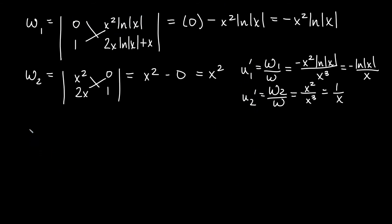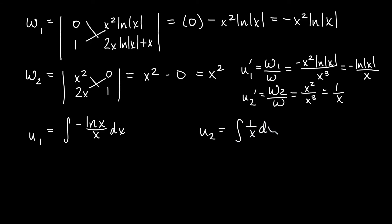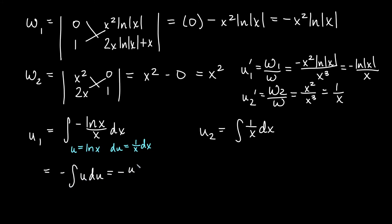We integrate to find u1 and u2. u1 is the antiderivative of negative ln x over x dx. Using u-substitution with u equals ln x, du equals 1 over x dx, this becomes the negative integral of u du, giving negative u squared over 2, or negative ln squared x over 2. For u2, the antiderivative of 1 over x dx is simply ln of x. We leave off constants of integration when finding u1 and u2.